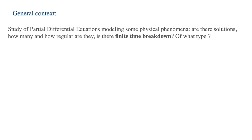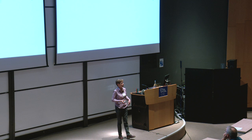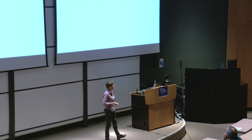Let me explain in a few words some questions you can ask when you're given an equation coming from physics. The first question you can ask is: are there solutions? And then what do they look like? How many are there? And especially, is there some kind of finite-time breakdown? And if there is, of what type is it? What does the solution look like at that time?